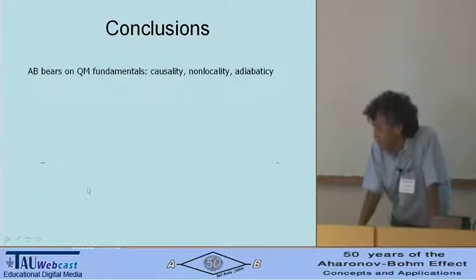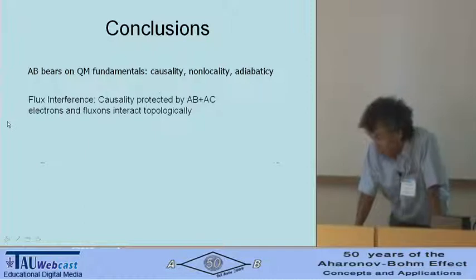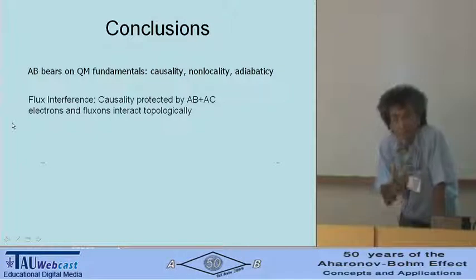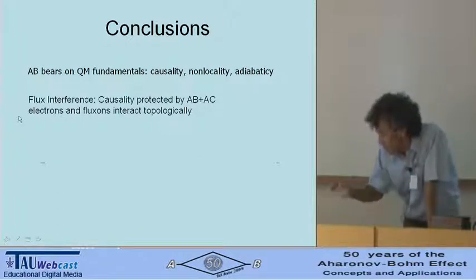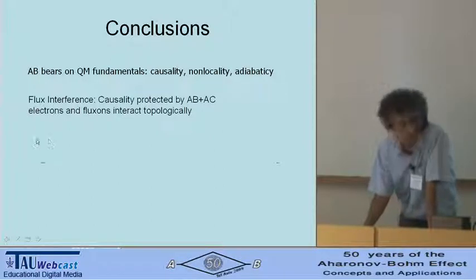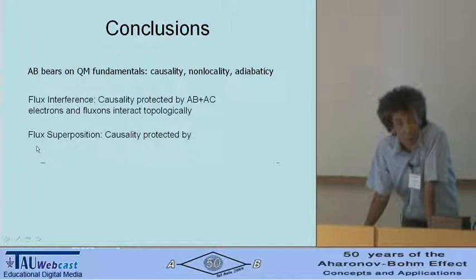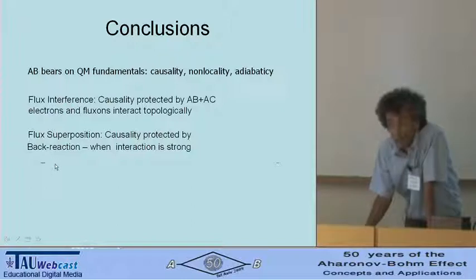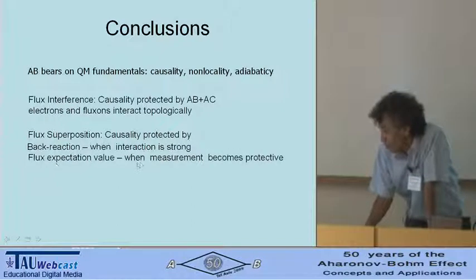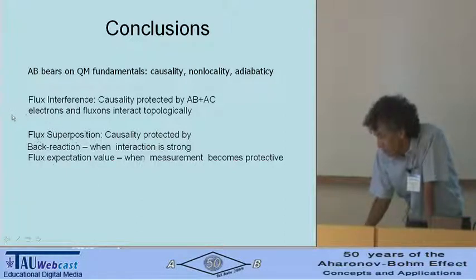So in conclusion, AB bears on several fundamental quantum mechanical issues, causality, non-locality, adiabaticity being only a few of them. In one case in which there was an interference between fluxes in two solenoids, then the very fact that we treated both of them on equal footing as quantum mechanical objects, then the AB and AC emerge naturally as complementary as dual effects, and electrons and fluxons, both of them interact topologically. In the case of fluxon superposition in which you had one solenoid, causality was protected either by the easier case of back reaction where the interaction was strong, and when you took care to prevent that, then you brought the measurement becoming protective and preserving the expectation value. That both the AC and protective measurement were discovered by the same man, I believe is of little surprise.